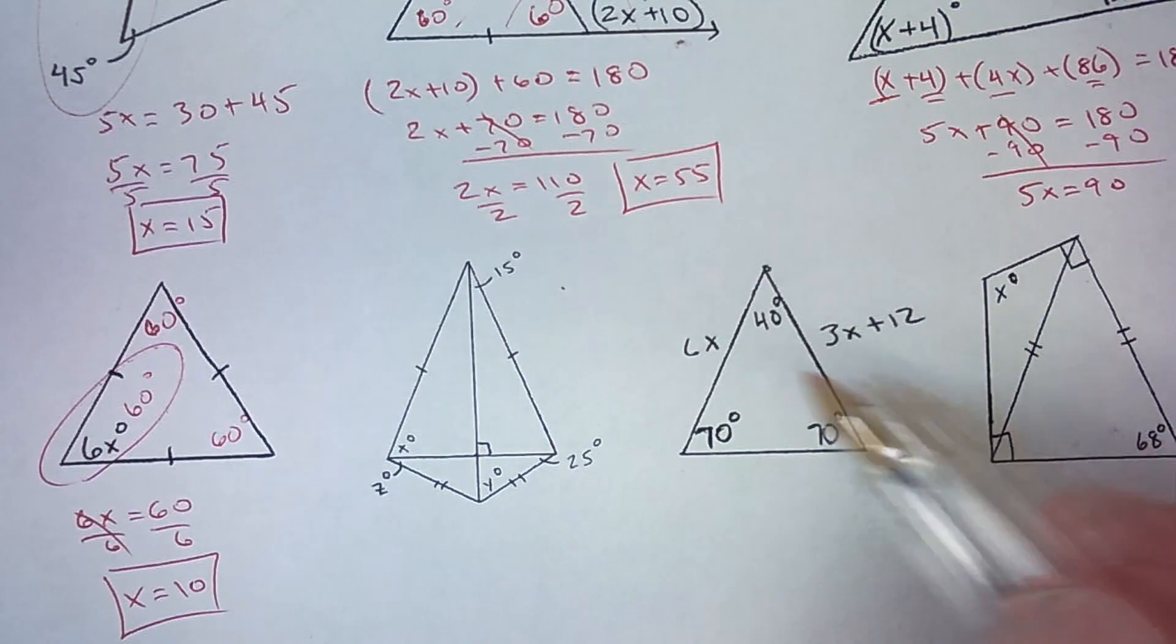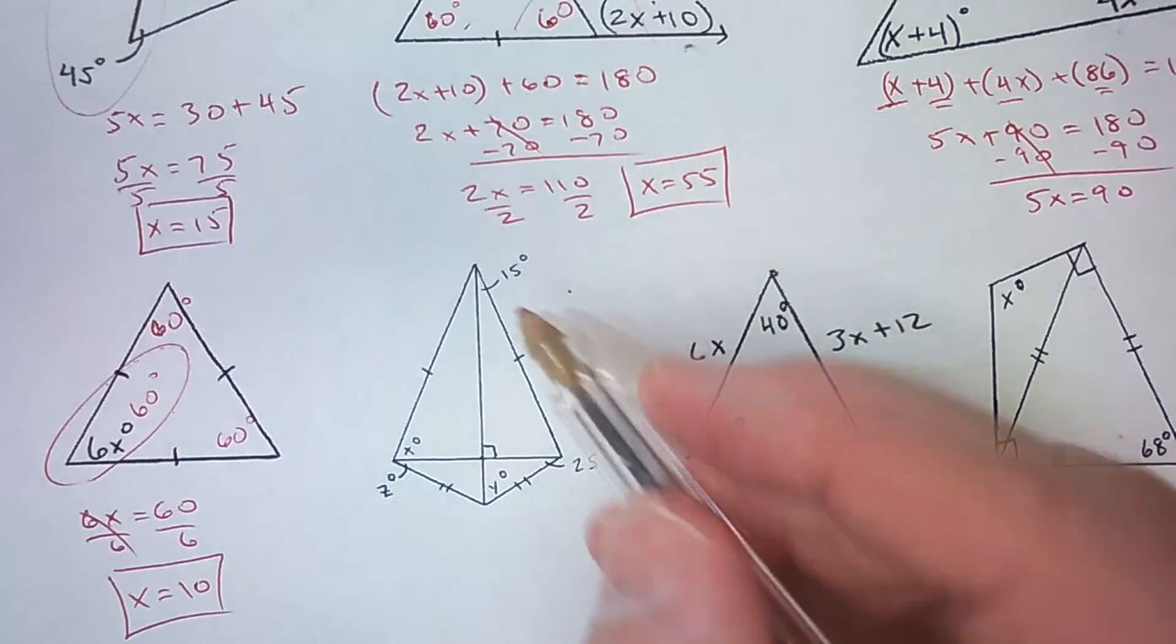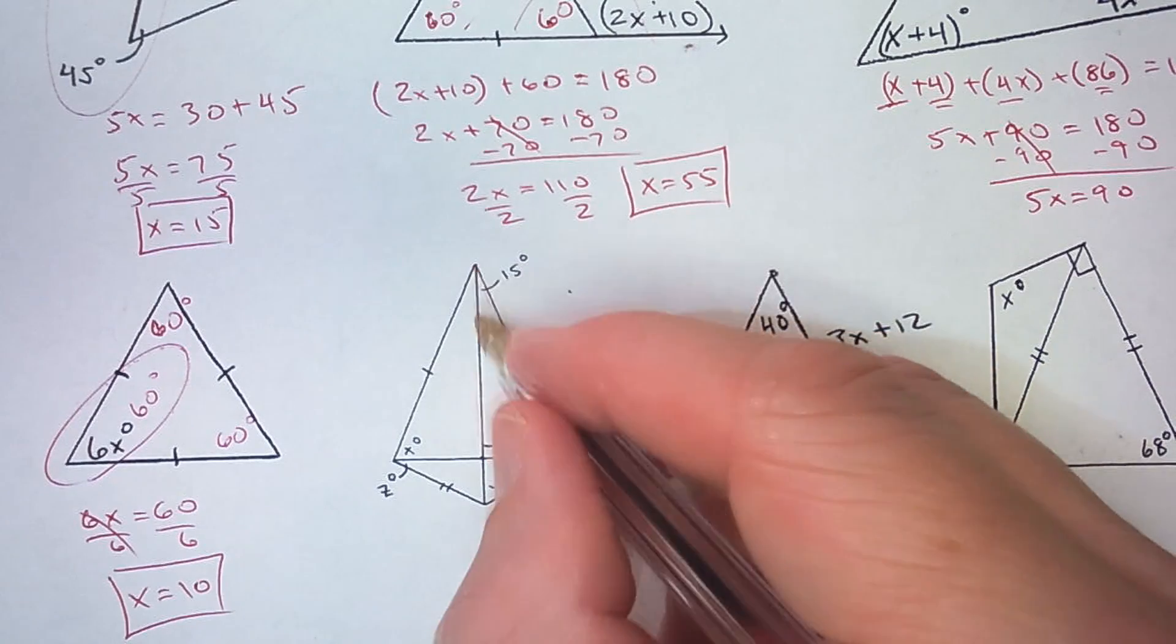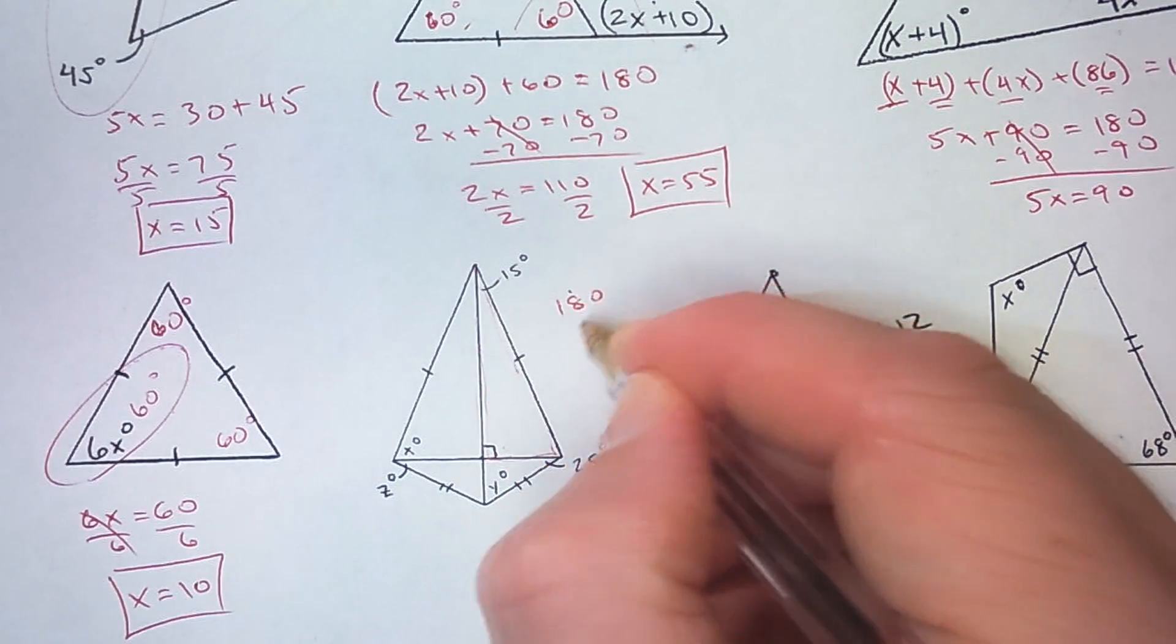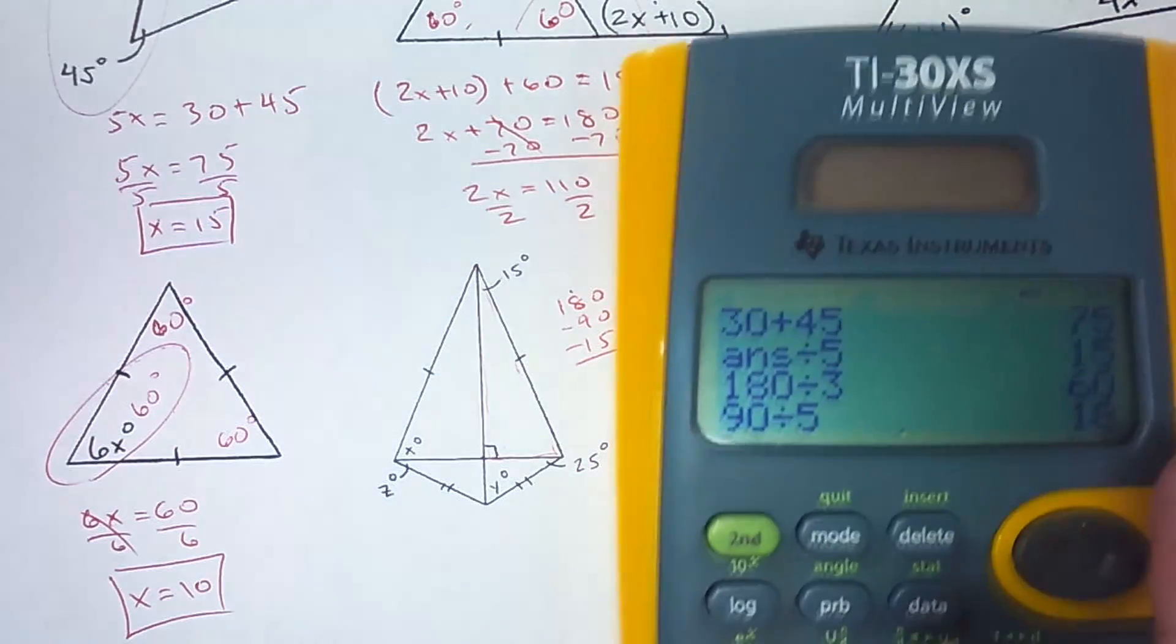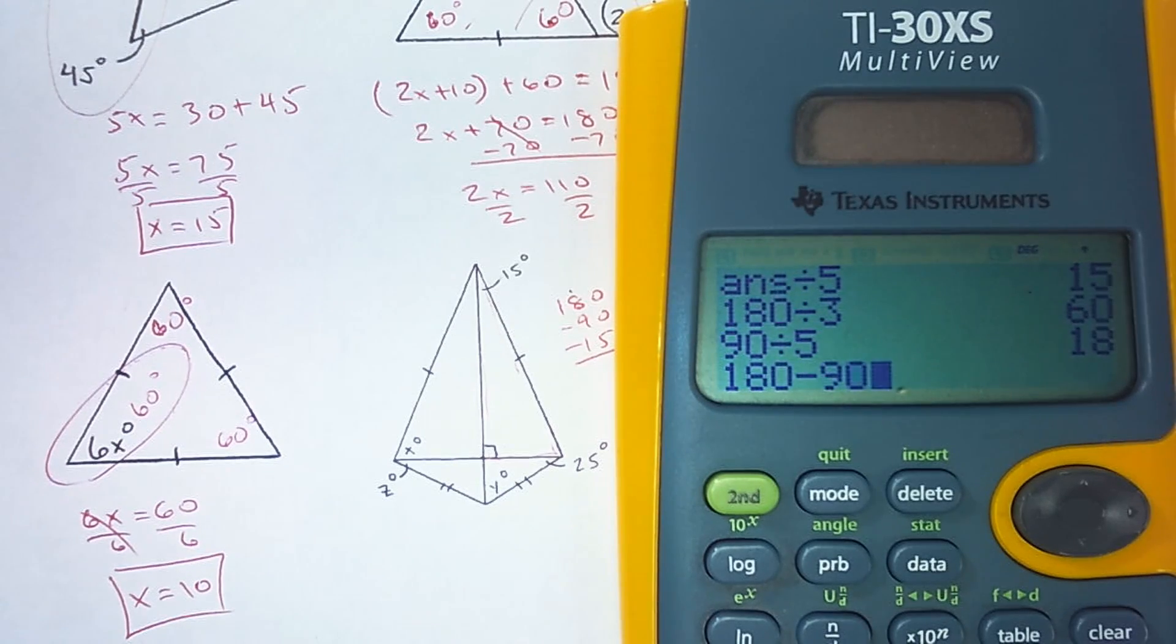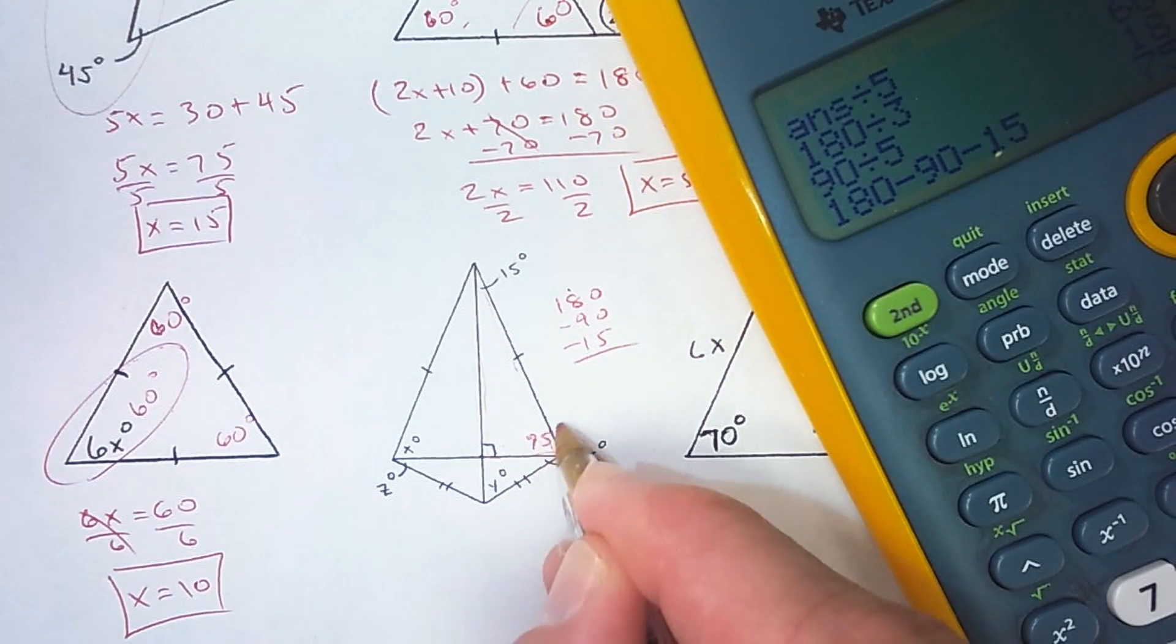So here I've got four triangles kind of all put together here. And in this triangle right here, I have a 90 and a 15. And if I take those two away from 180, so I've got 180 minus 90 minus 15, that gives me 75. So this is 75 degrees.